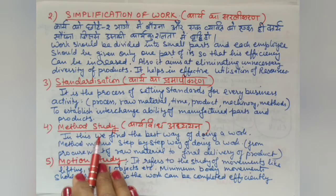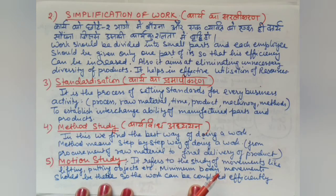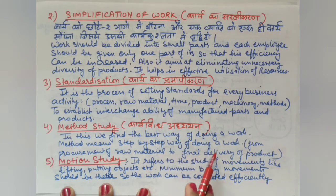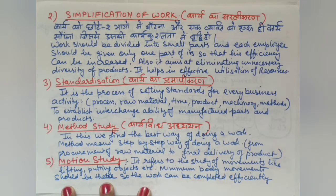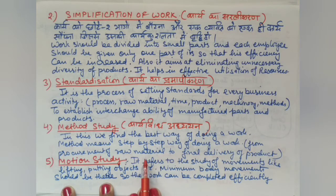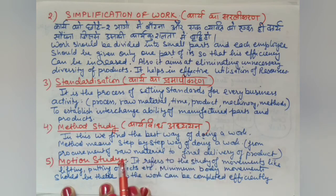The fourth technique is Method Study. In method study, we find the best way of doing a work — step by step, from procurement of raw material to final delivery of the product. For example, how raw materials are bought, how production is carried out with standard machines, and how the product is delivered to the customer — the whole process is standardized for the best results.